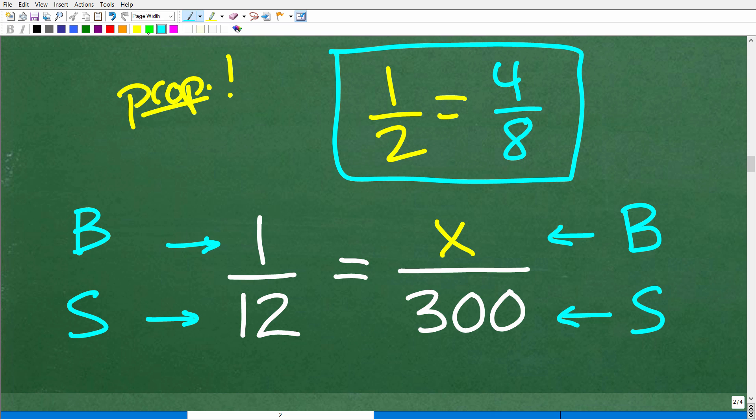Proportions are awesome because when you have a proportion set up, you can use a property called the cross product to solve proportion problems. That's what we have here. The cross product means that when we multiply crossways on a proportion, the cross products are going to be equal.